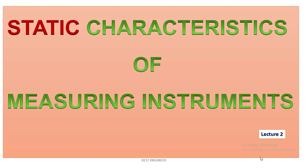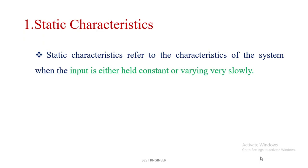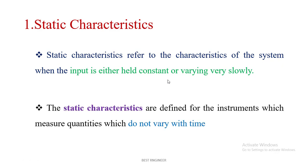In this video, let me see the static characteristics of measuring instruments. Static characteristics refers to the characteristics of the system when the input is either constant or varying very slowly. In other terms, the static characteristics are defined for an instrument which measures quantities that do not vary with time — they remain constant and do not vary with respect to time.